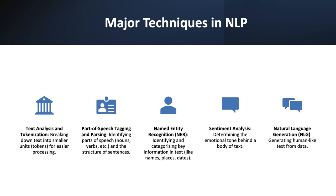Sentiment analysis is the process of determining the emotional tone behind a body of text. This is an important aspect of NLP that helps to identify whether the sentiment of a text is positive, negative, or neutral. Sentiment analysis is commonly used to understand customer opinions, gauge brand sentiment, and analyze social media content. It enables the automated analysis of subjective information, providing insights into the emotions and opinions expressed in text.